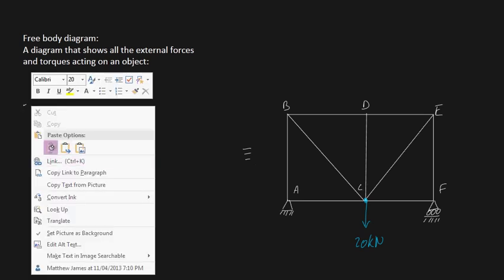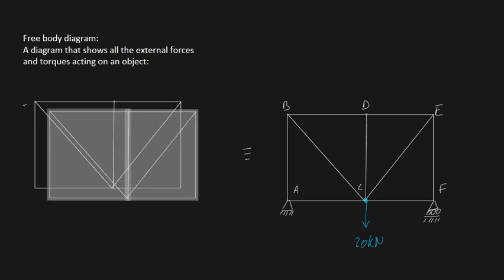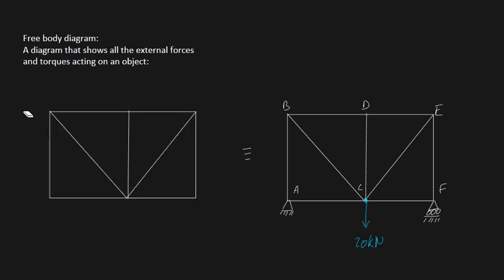Let's replace the supports with external forces. The 20 kilonewtons is an external force, so it stays in the free body diagram. The fixed support will try to prevent movement both in the horizontal and vertical direction, so we have a reaction force at point A in the Y direction, RAY, and a reaction force in the horizontal direction, RAX — the reaction force at point A in the X direction. I'll specify my X and Y axes here.